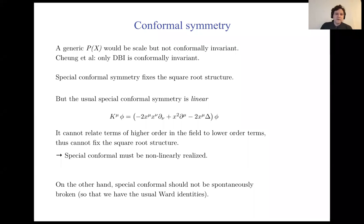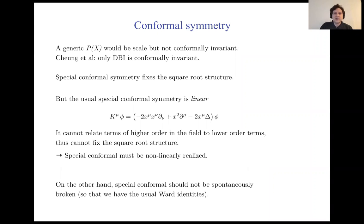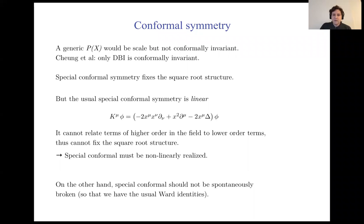This raises a puzzle: a generic P-of-X theory would be scale invariant automatically in D equals zero, but not conformally invariant. So the special conformal symmetries must be fixing this square root structure. However, the usual form of special conformal transformations is linear, and a linear transformation can't fix the square root structure — it can't relate terms of higher order in the field to terms of lower order. So in this case, the special conformal symmetry has to be non-linearly realized. Moreover, we need a non-linearly realized symmetry that is not spontaneously broken, so that the standard Ward identities still hold.